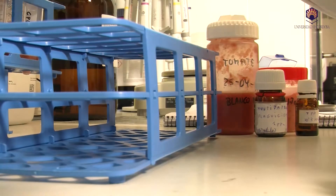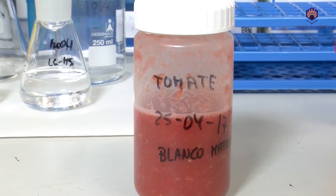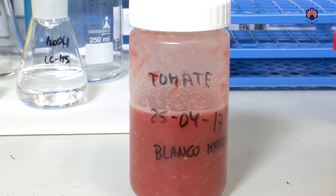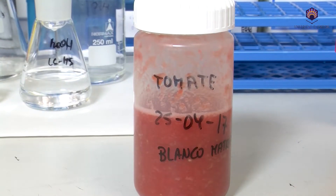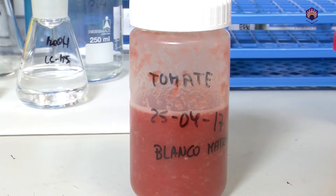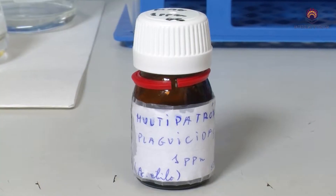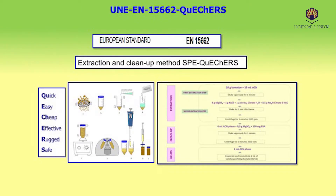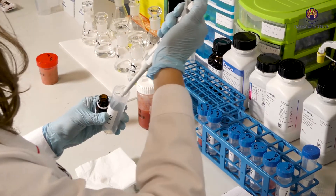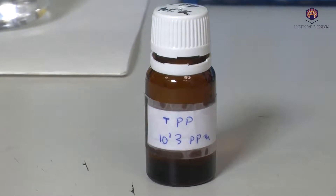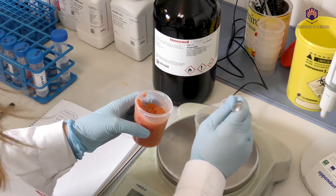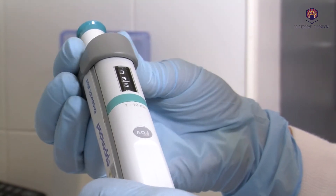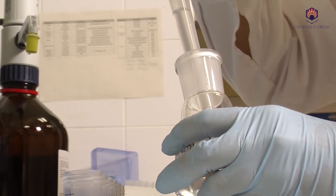To prepare the four standards of the calibration curve, we use a matrix blank — a tomato that has been previously checked for the absence or non-detection of pesticides — and add different volumes of a multi-pesticide calibration standard of one part per million, or ppm, depending on the calibration standard prepared. The extraction and cleanup procedure carried out is the dispersive SPE, solid phase extraction, QuEChERS. Firstly, in the extraction tube, we add 100 microlitres of a solution of 10 ppm of triphenyl phosphate, our internal standard, then we weigh 10 grams of sample and add organic solvent — in this case, acetonitrile. It is shaken to enhance contact.